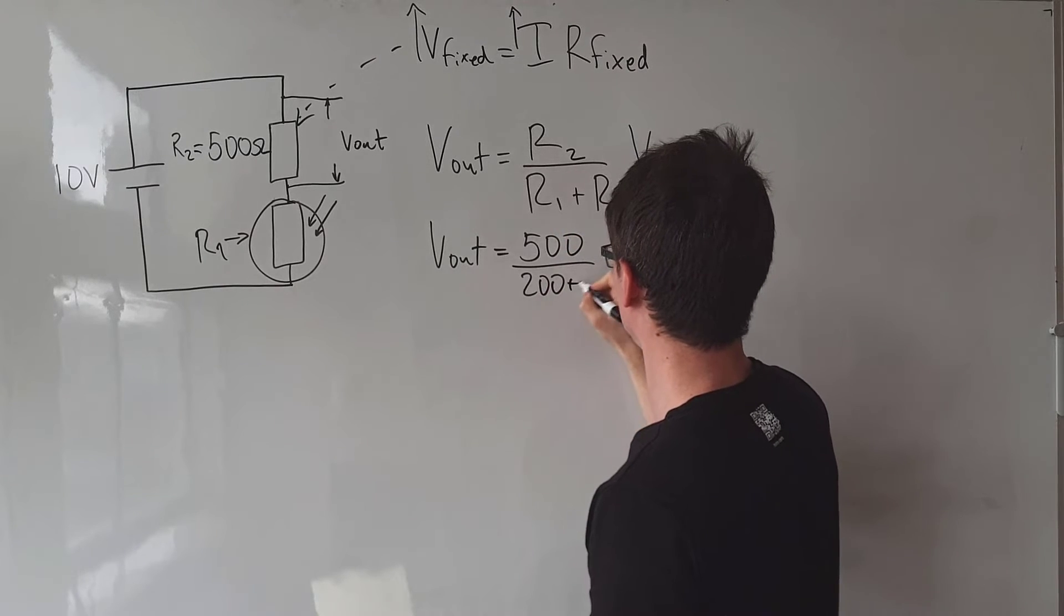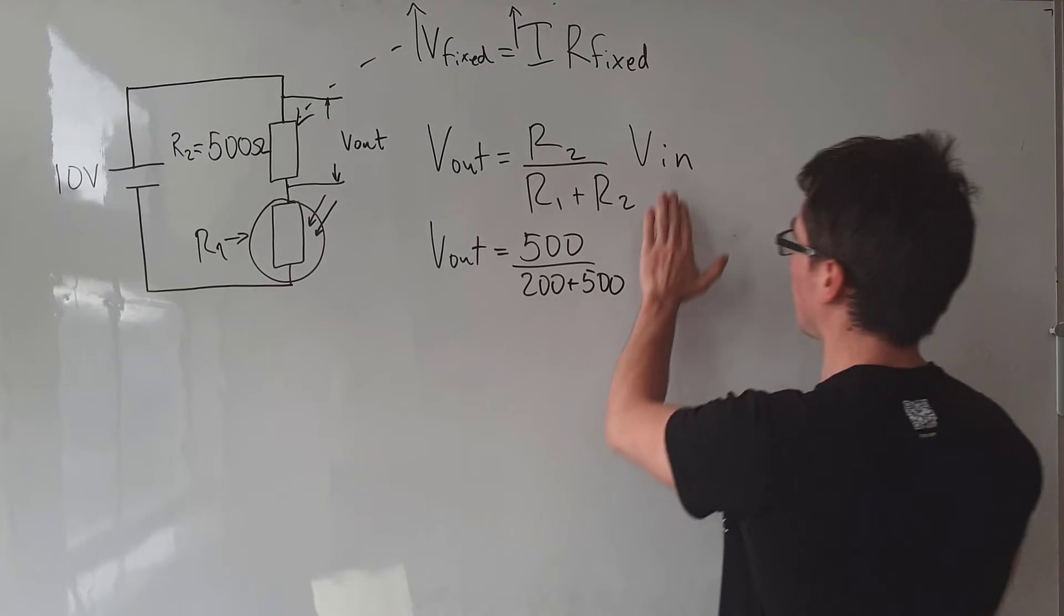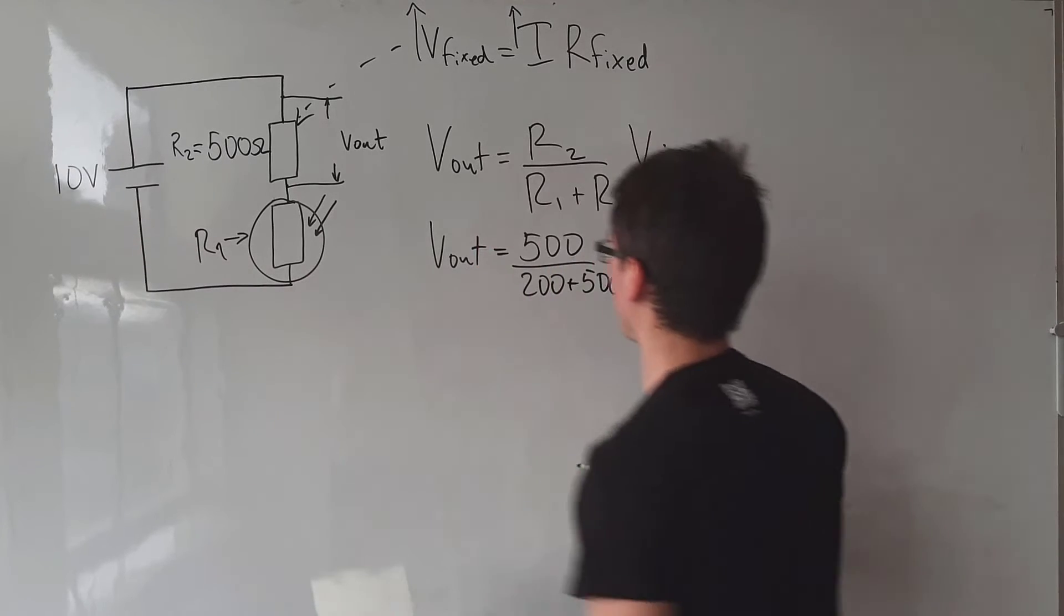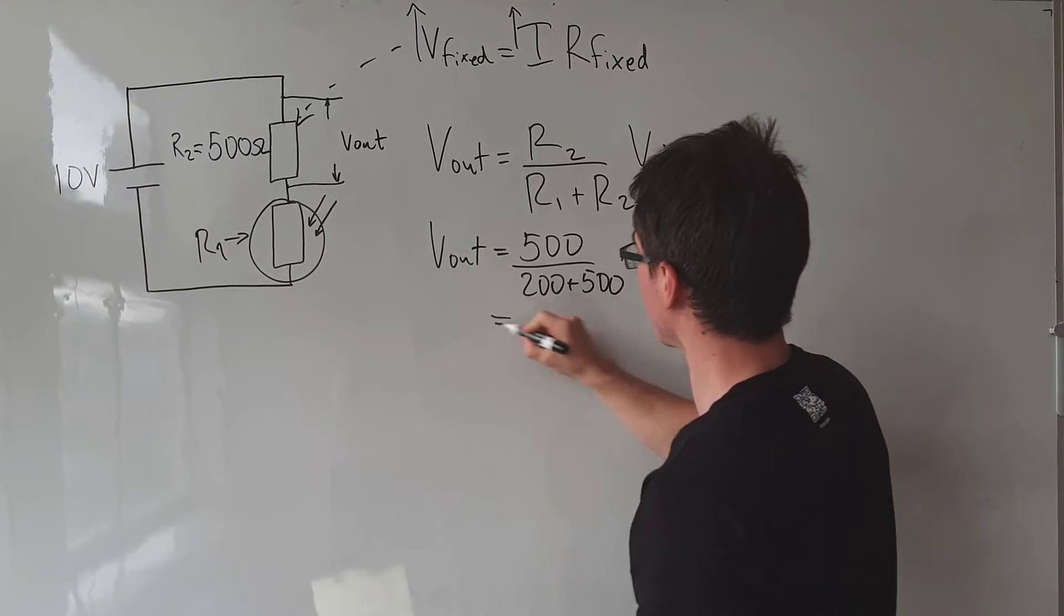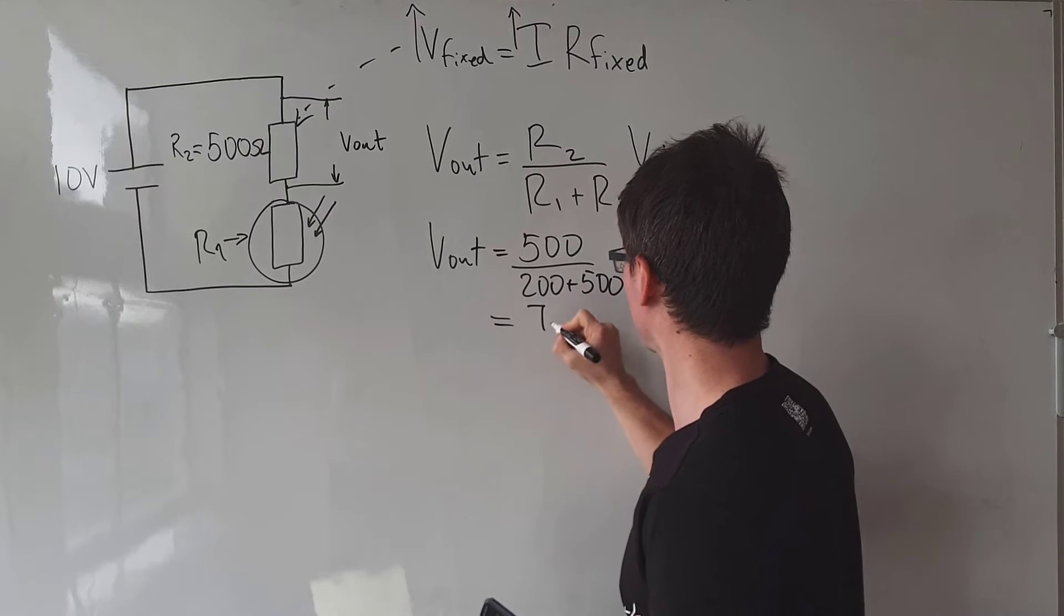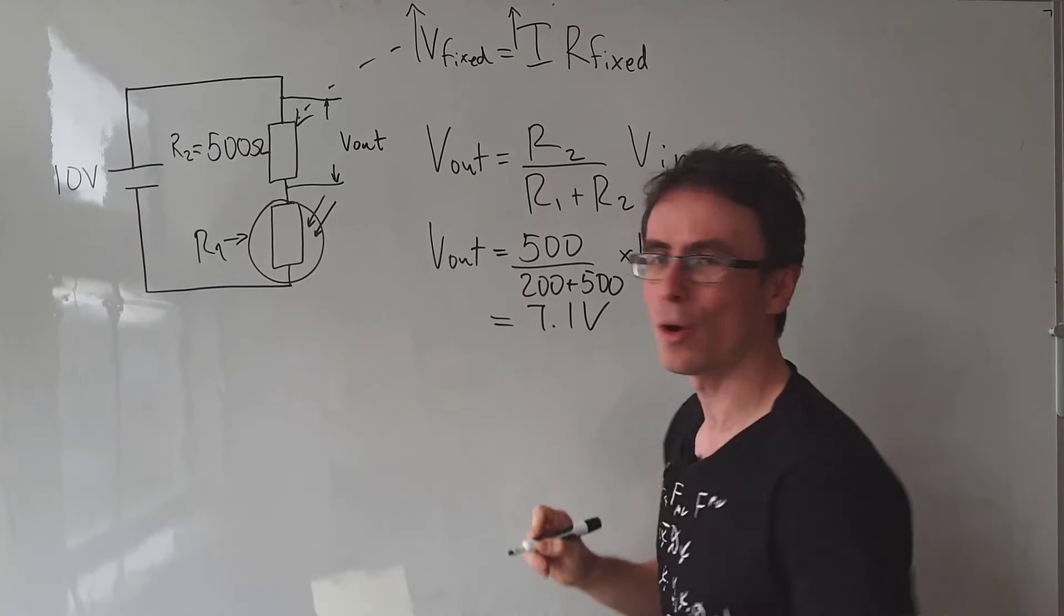So it's 200 plus 500, multiplied by V_in which is our EMF, 10 volts. If we put that into a calculator, we get 7.1 volts.